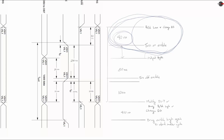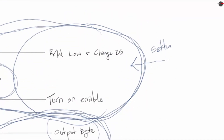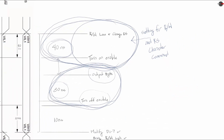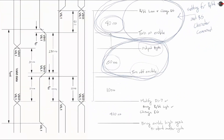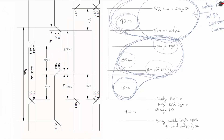We already have an output byte function, so all we really need to do is add the turn off the enable after 89 nanoseconds in that same function. So we can bring those together — setting the read-write, setting for read or write, and register select for character or command. The next one will be outputting the byte and simply turning off the enable. I'm also going to add this 10 nanoseconds in this function, so we definitely need to wait 10 nanoseconds before any more modification with the data pins or the read-write and register select.